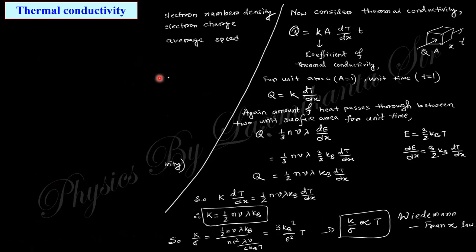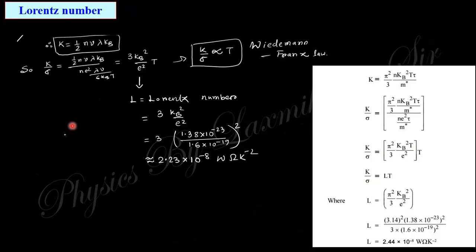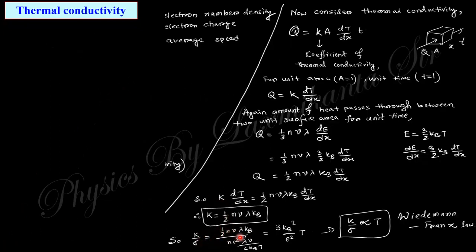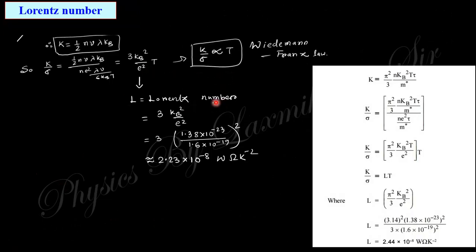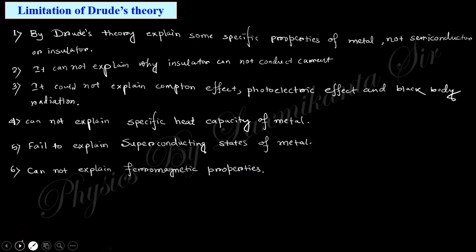Thermal conductivity equals K equals half n v lambda, as discussed previously. The Lorentz number is the ratio K over sigma, which is constant — its value is 2.23 times 10 to the power minus 8 Watt-Ohm per Kelvin squared. The limitations of Drude theory include: it cannot explain the properties of metals versus semiconductors versus insulators, cannot explain why insulators do not conduct, cannot explain the Compton effect or blackbody radiation, cannot explain the specific heat of metals, and fails to explain superconductivity and ferromagnetic properties.